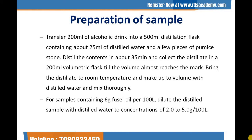Let's see the preparation of the sample. Transfer 200 ml of alcoholic drink into a 500 ml distillation flask containing about 25 ml of distilled water and a few pieces of pumice stone. Distill the contents in about 35 minutes and collect the distillate in a 200 ml volumetric flask until the volume almost reaches the mark. Bring the distillate to room temperature, make up to volume with distilled water, and mix thoroughly. For samples containing more than 6 grams fusel oil per 100 litres, dilute the distilled sample with distilled water to a concentration of 2–5 grams per 100 litres.